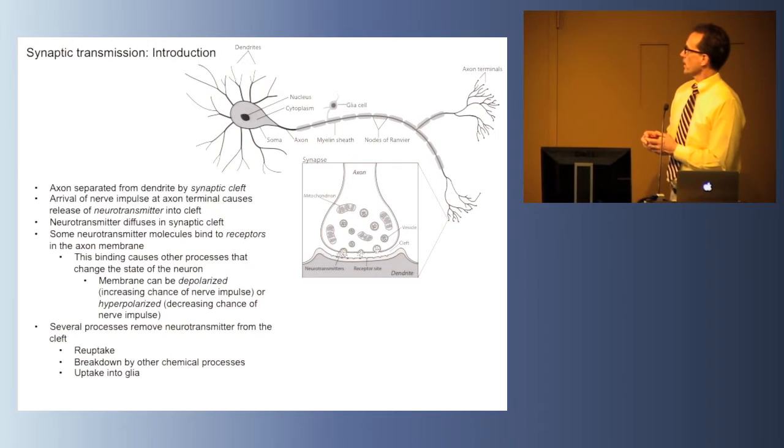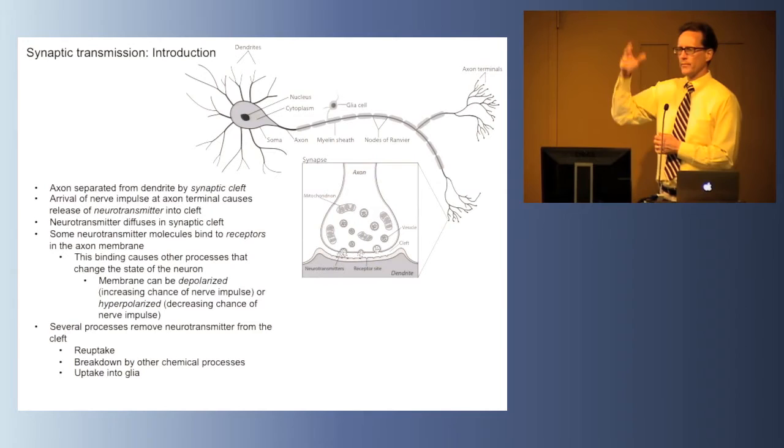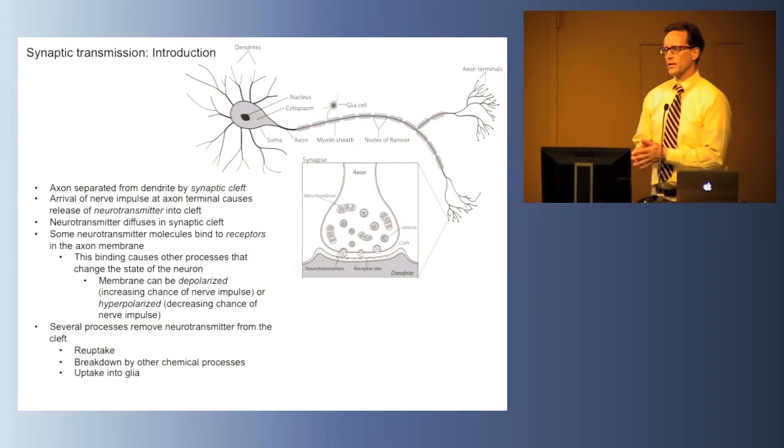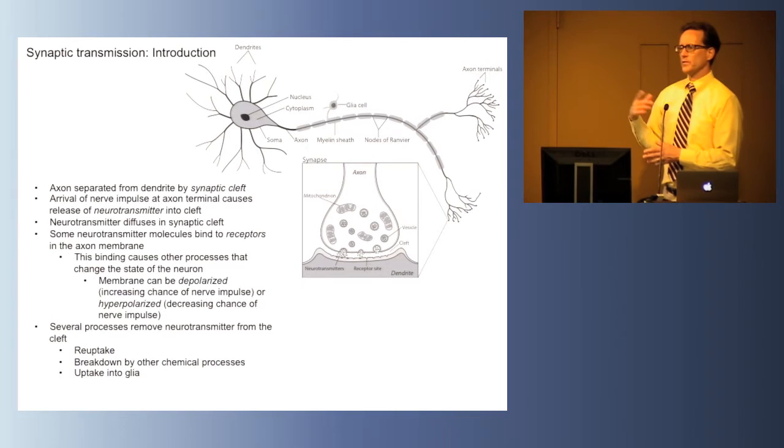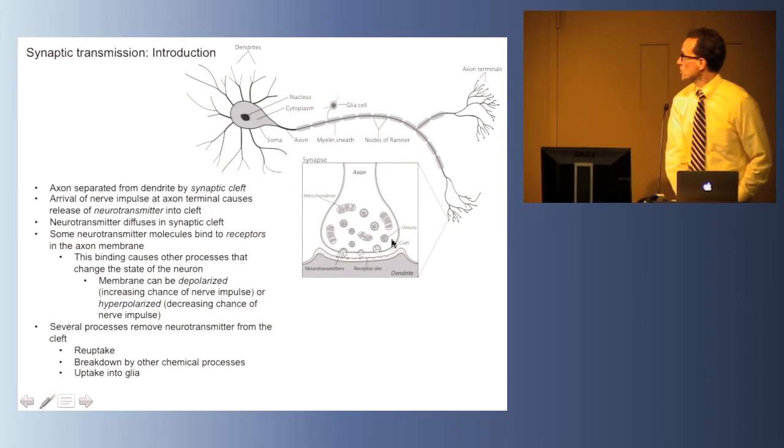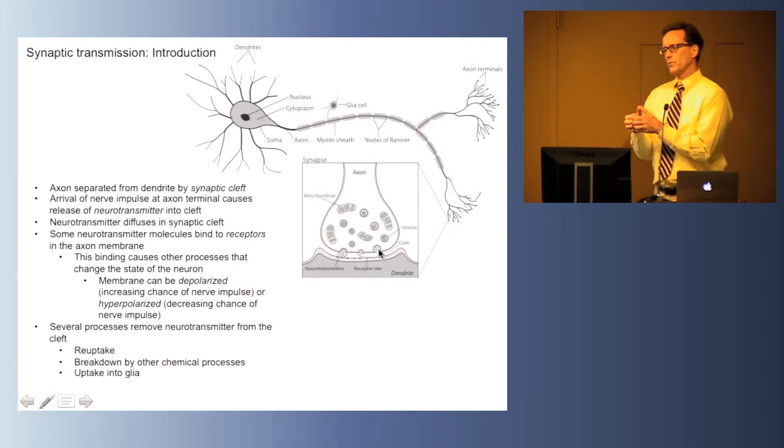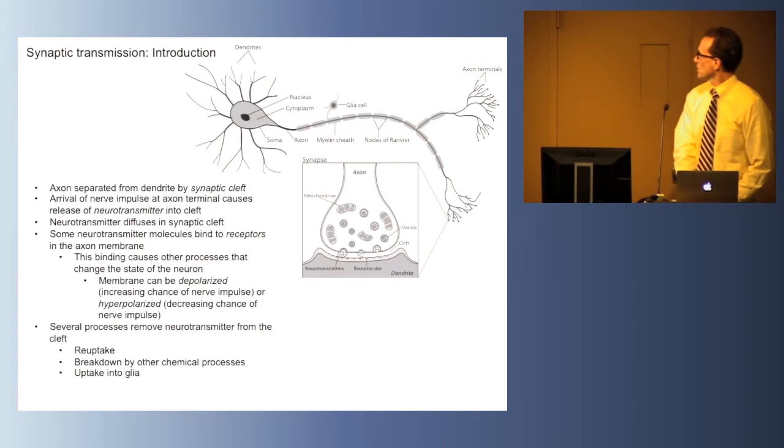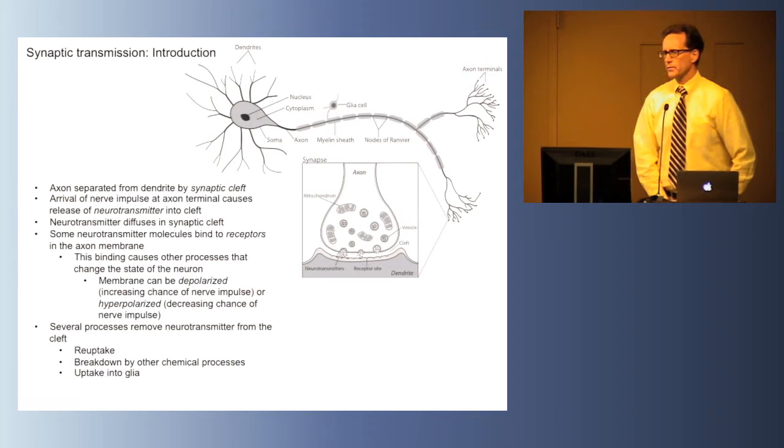The diagram illustrates the synaptic transmission event. We imagine an action potential being issued from the cell body, traveling down the axon, and it reaches this tip of this branch of the axon. When the action potential reaches the tip of the axon, it causes events to happen such that the vesicle moves to and binds to the membrane of the cell and becomes one with it and releases its contents into the synaptic cleft.